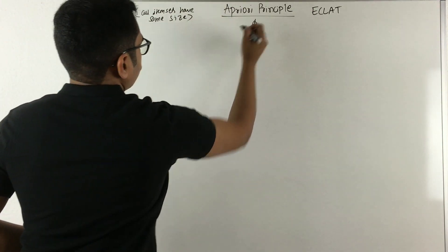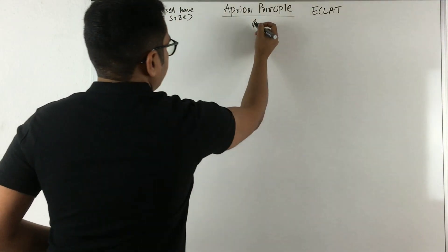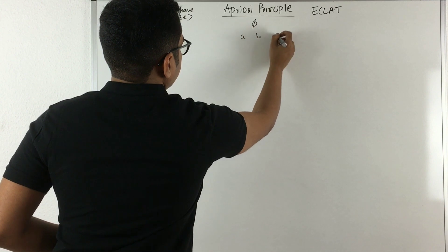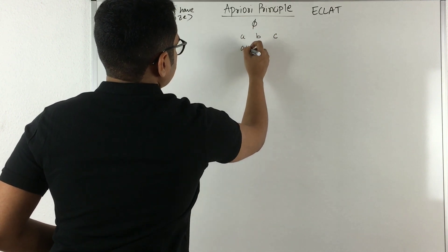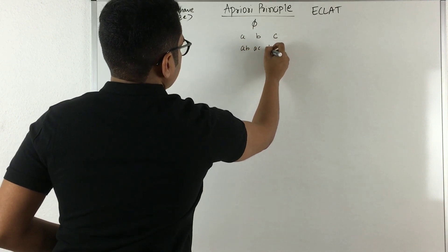Say you have, at the very beginning, then you have say A, B, C, then what you do is you just combine all this: AB, AC, BC.